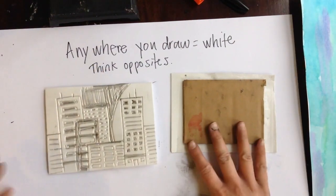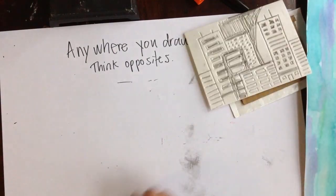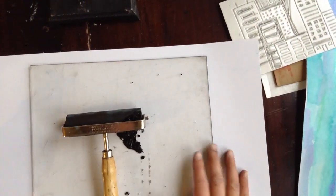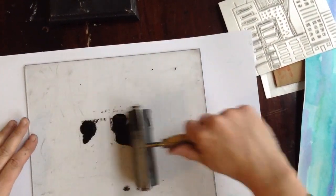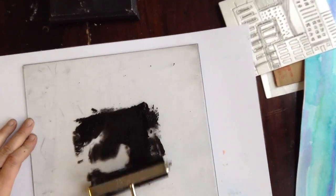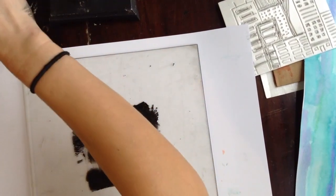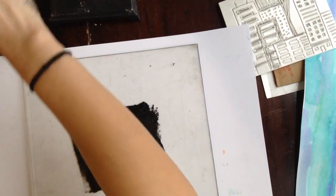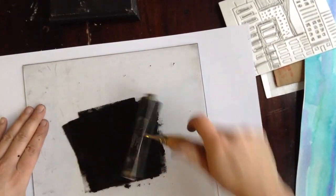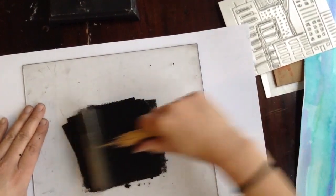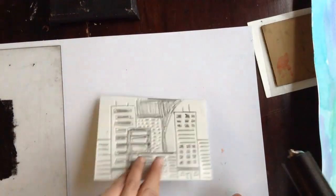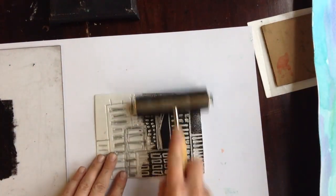All right, when you're ready, then you're going to ink up your city. You want the ink to be nice and even on the plate. Put your city down and then you'll ink up your city.